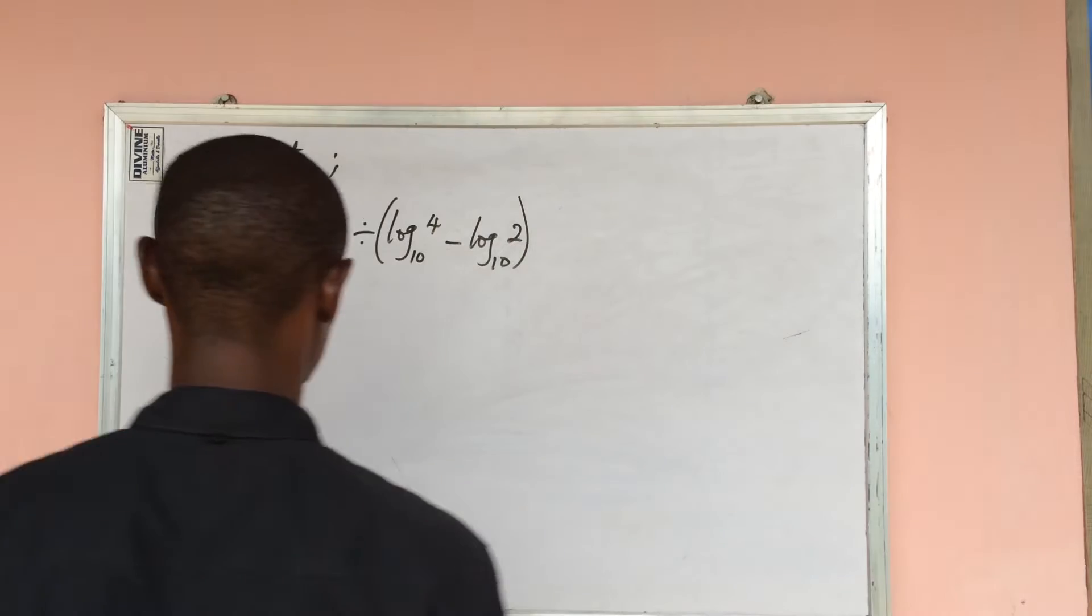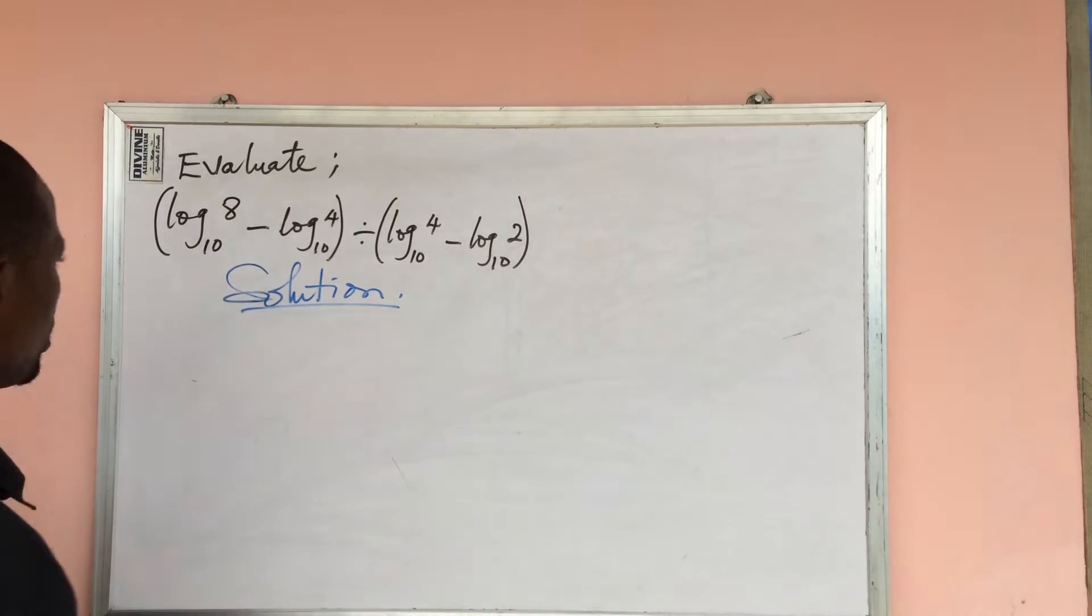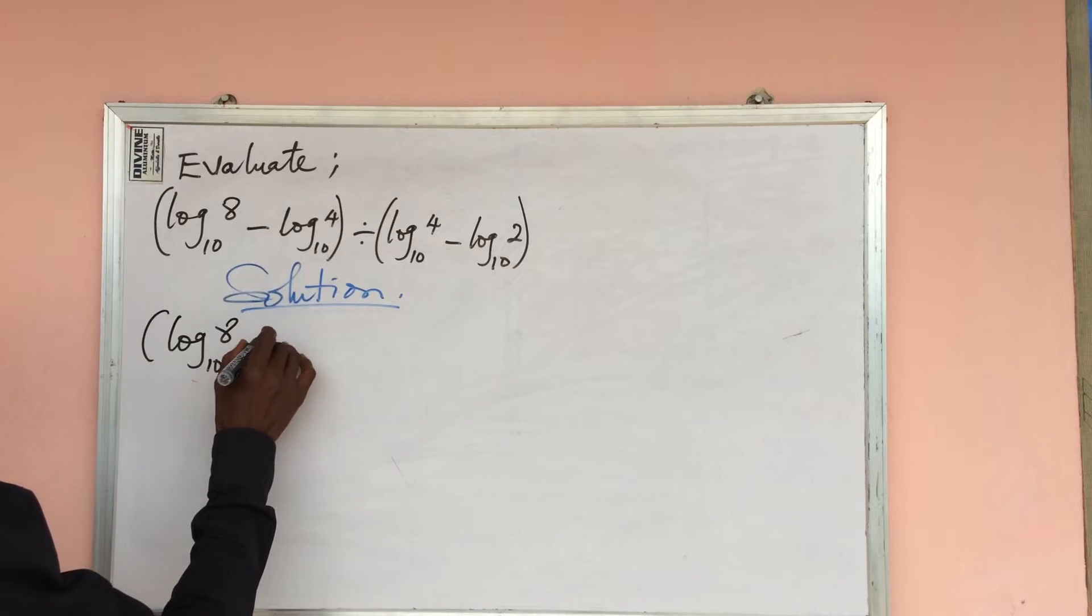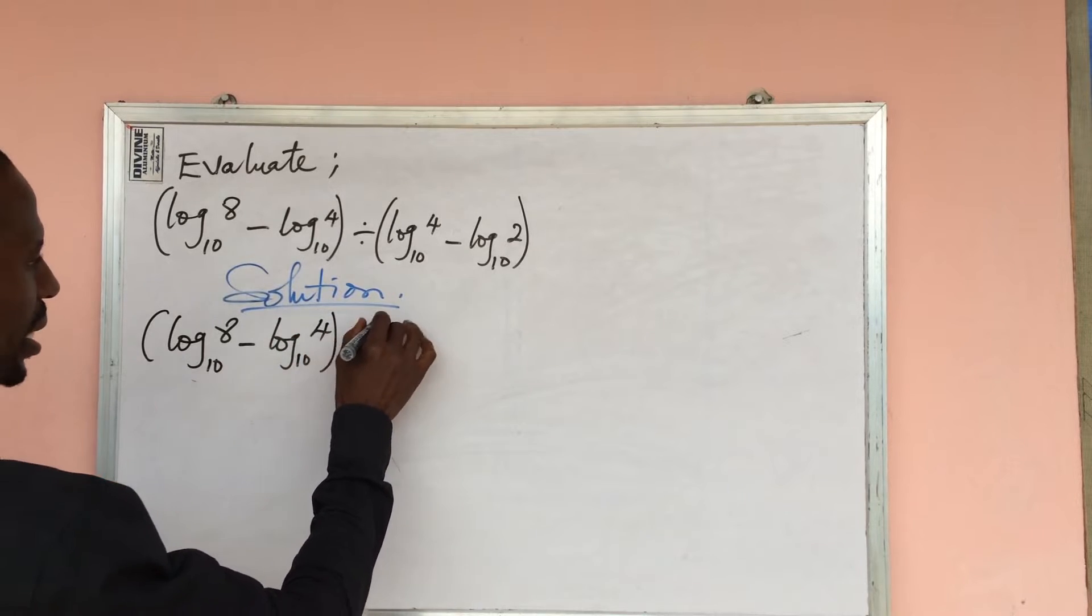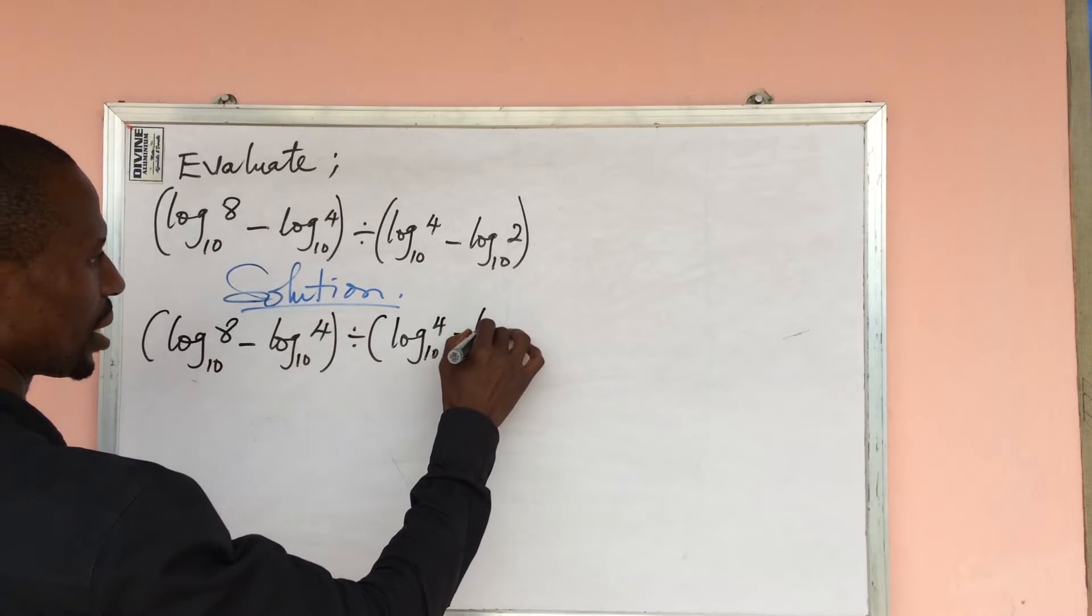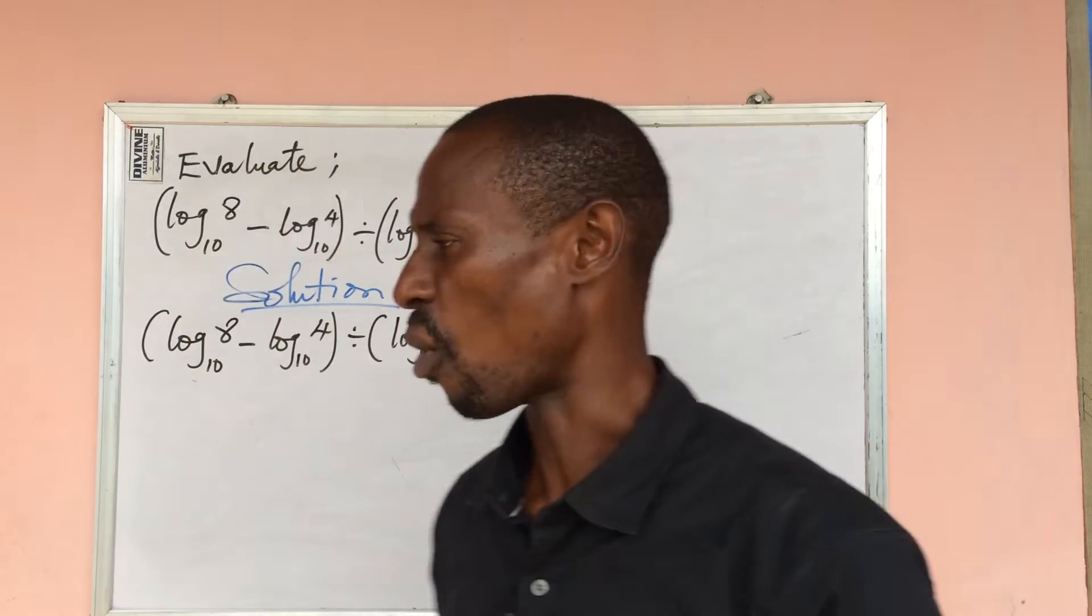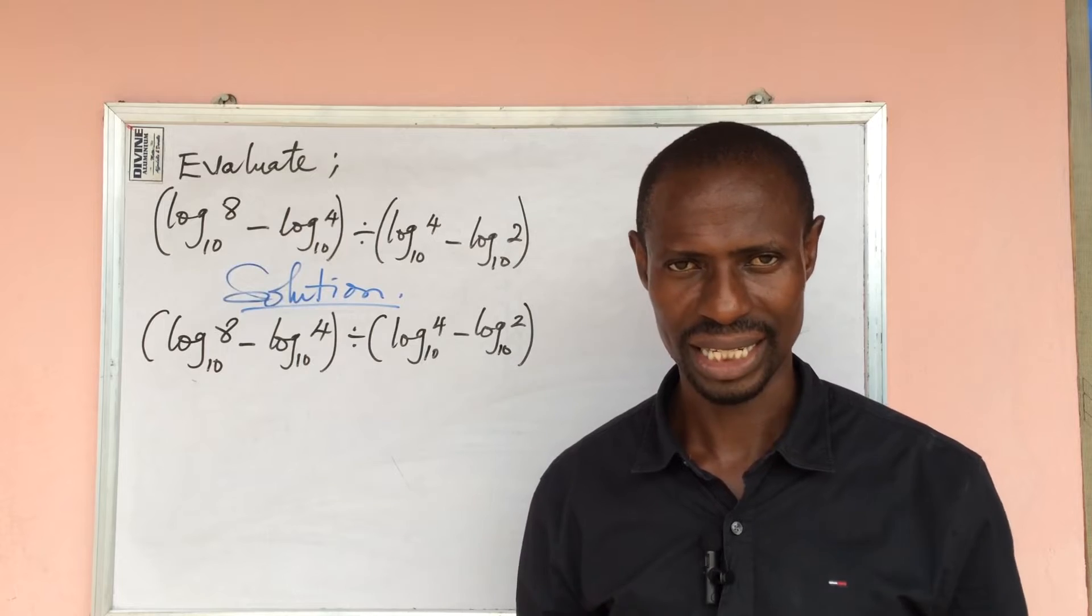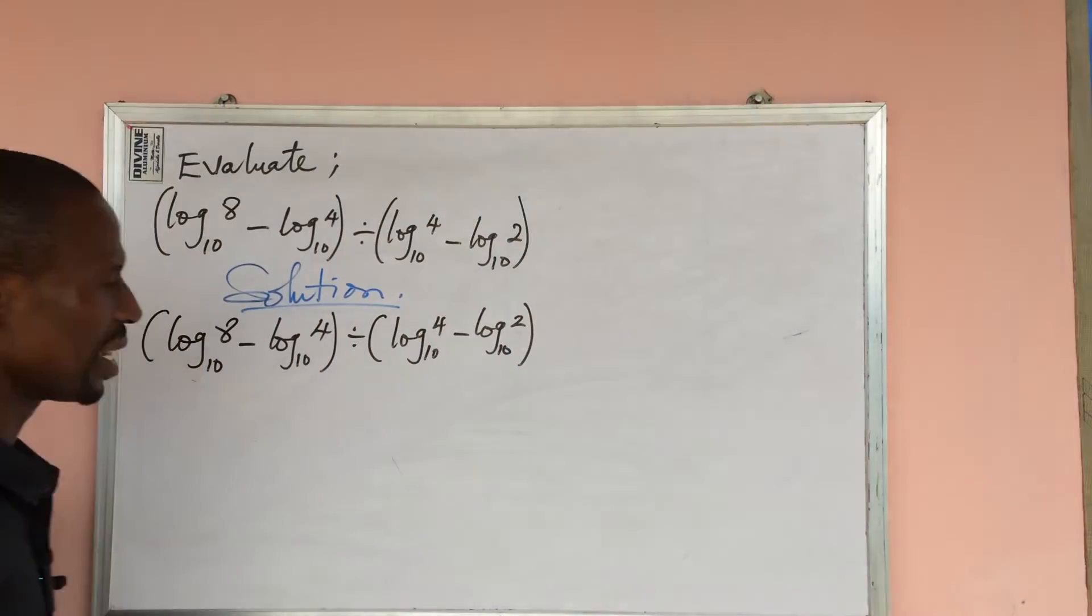Let's take our solution. The question says: bracket open log 8 base 10 minus log 4 base 10, close bracket, divided by bracket open log 4 base 10 minus log 2 base 10. How do we handle this? Let's first of all handle the terms that are in brackets. According to the rules, the law of BODMAS, handle those that are in brackets first before you go outside the system.